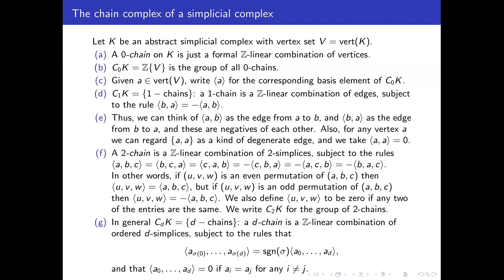And in general, for d-chains, a d-chain is a Z-linear combination of ordered d-simplices. And we have the same kind of sign rule, that if we permute the indices according to some permutation σ, then that just gives us a sign sgn(σ), which is plus one for even permutations and minus one for odd permutations. So the ⟨a₀,...,aₐ⟩, if we rewrite this as ⟨a_σ(0),...,a_σ(d)⟩, then that's the signature of the permutation σ multiply by the original thing ⟨a₀,...,aₐ⟩. And we also have this extra rule that if any vertices are repeated in the list a₀ up to aₐ, then that counts as the zero d-chain.